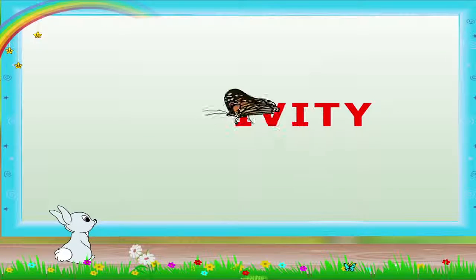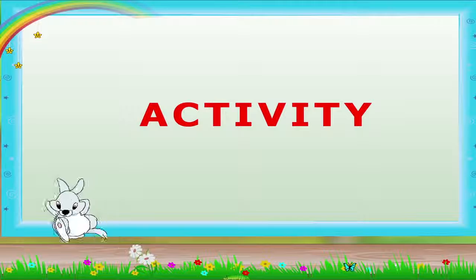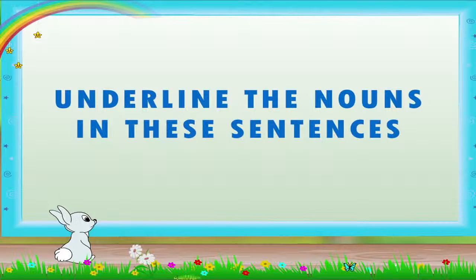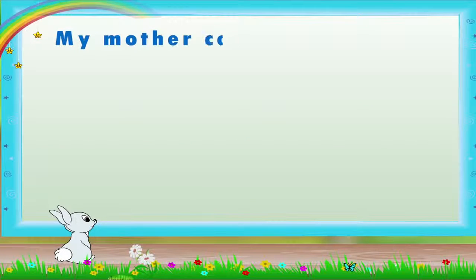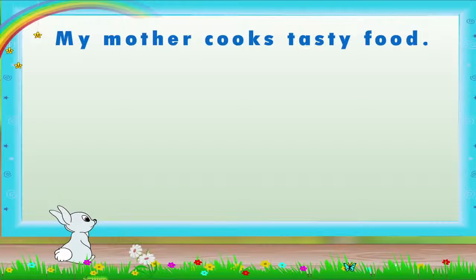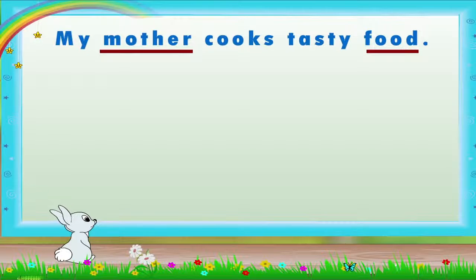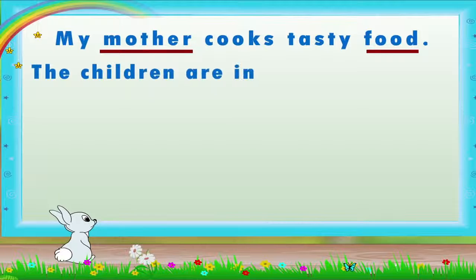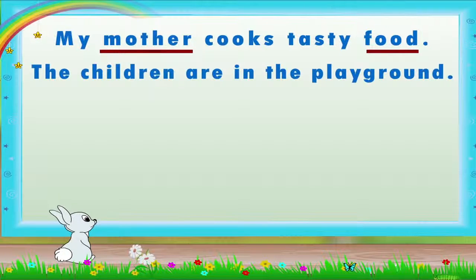Now let us do another activity, Rainbow. Are you ready? Good. Underline the nouns in these sentences. The first sentence is: My mother cooks tasty food. This sentence has two nouns — mother and food. The children are in the playground. The nouns are children and playground.